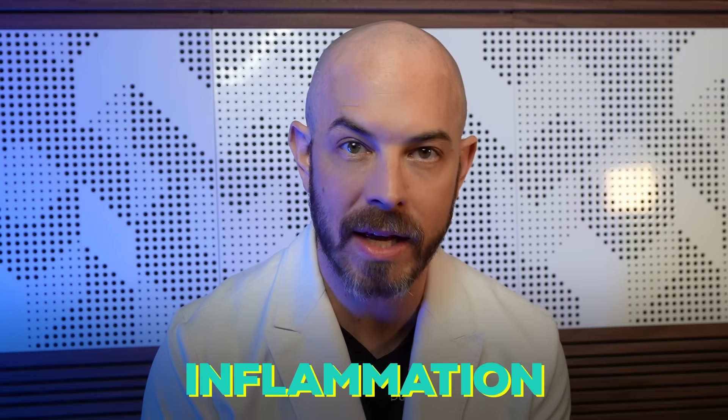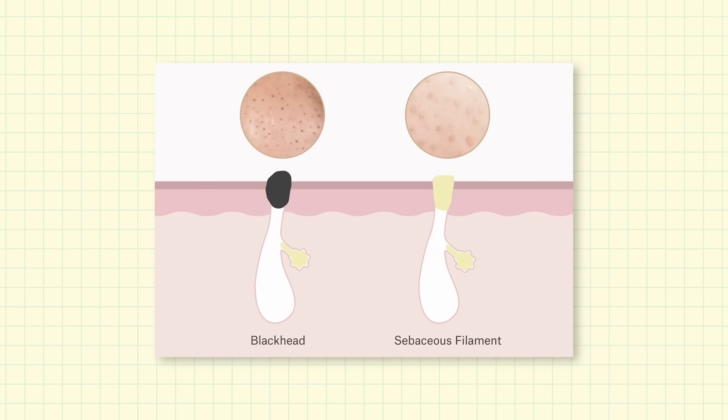A blackhead is still an accumulation of sebum and dead skin cells, but usually there's associated inflammation in the skin, which causes those dead skin cells to stick together more and actually plug up the surface of the pore so the oil doesn't escape normally. As the oil and dead skin cells accumulate, it's going to start to dilate that pore a little bit more. And when that larger accumulation of oil reaches the air, it oxidizes — your normal oil starts to oxidize, and when it oxidizes, it turns black or a darker color. That is essentially a blackhead.